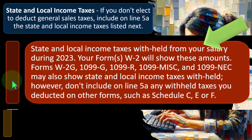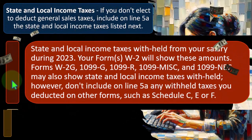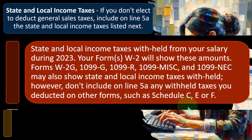However, don't include on Line 5A any withheld taxes you already deducted on other forms, such as Schedule C, E, or F. This is the same kind of problem we saw with medical expenses — things we can deduct are normally those that help generate revenue. If you had to pay certain state taxes as part of your business, that would be a business deduction on Schedule C for a sole proprietorship. If it was already allowed as a deduction on Schedule C, you can't also deduct it on Schedule A — that would be doubling up.